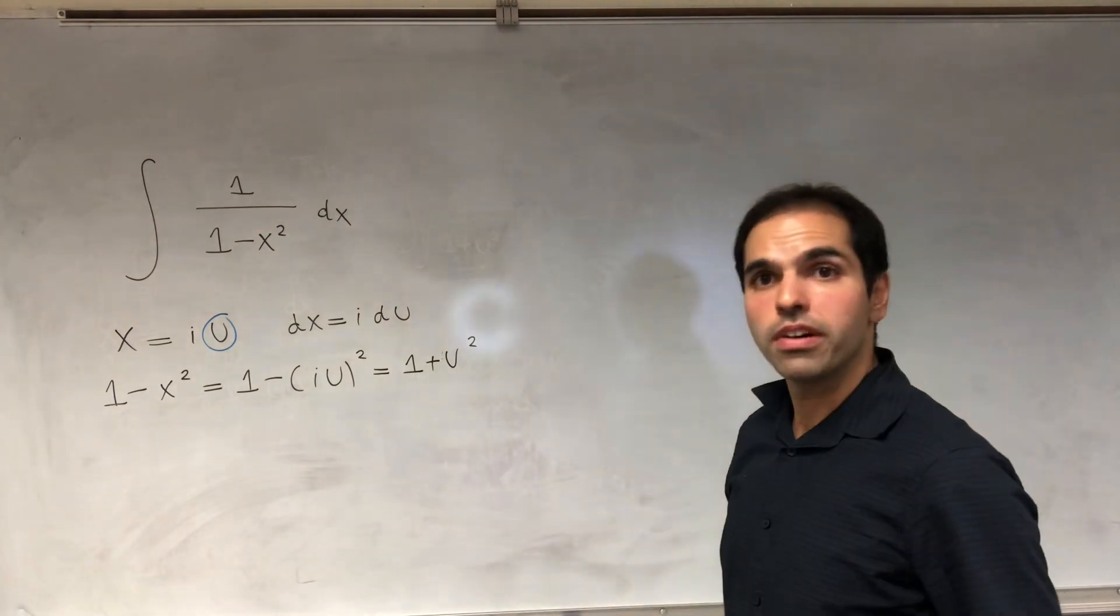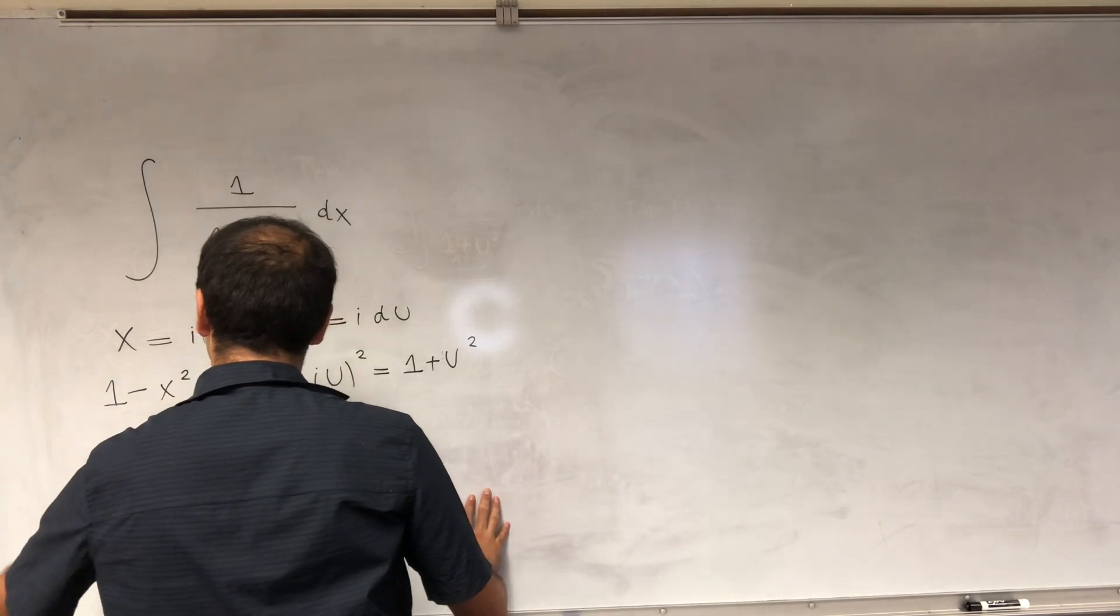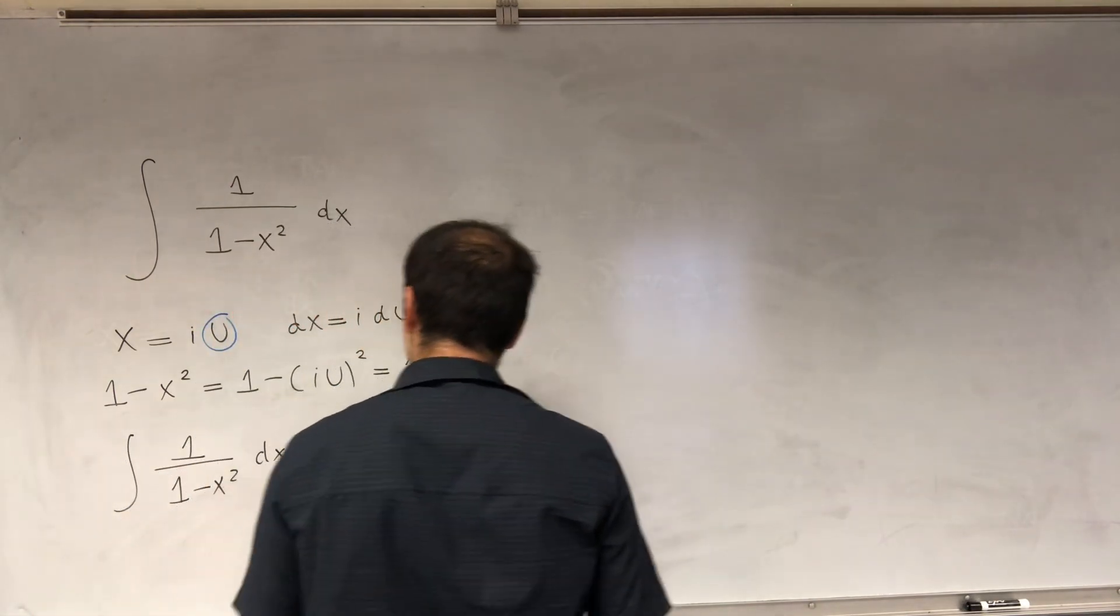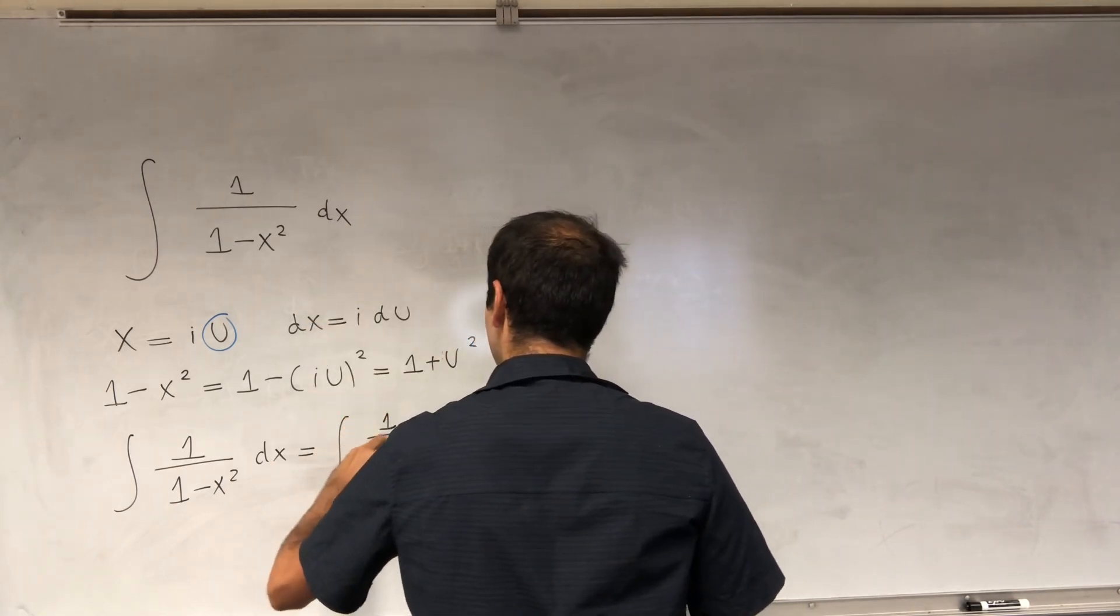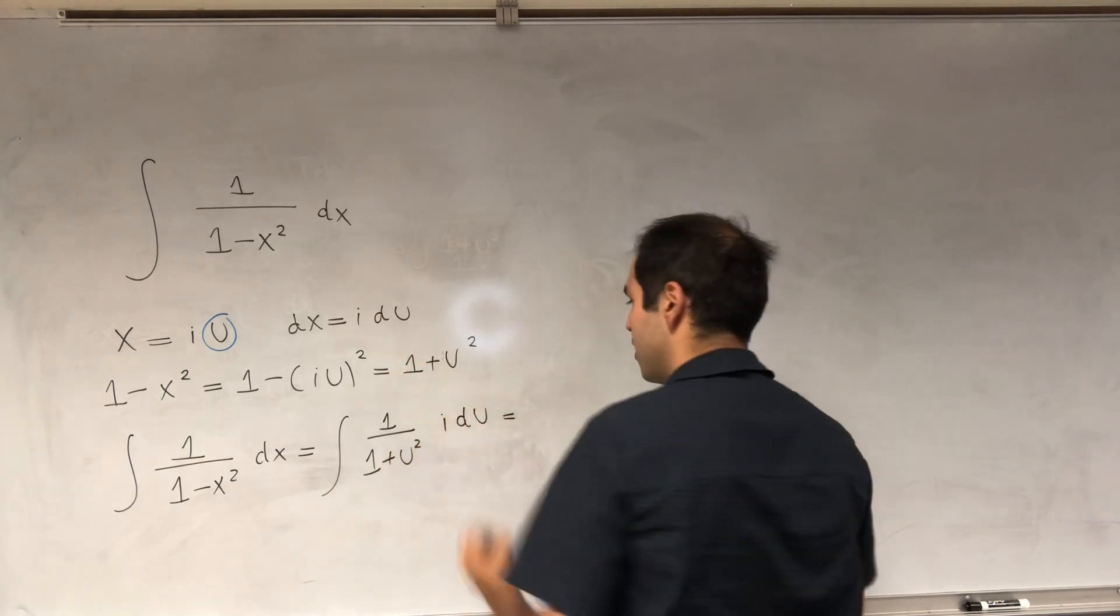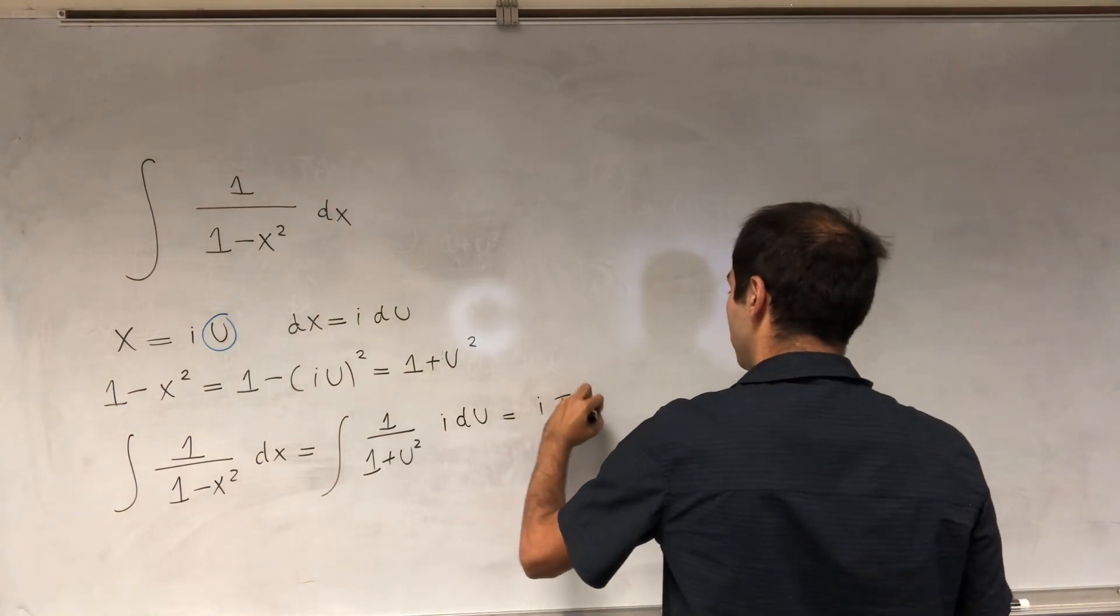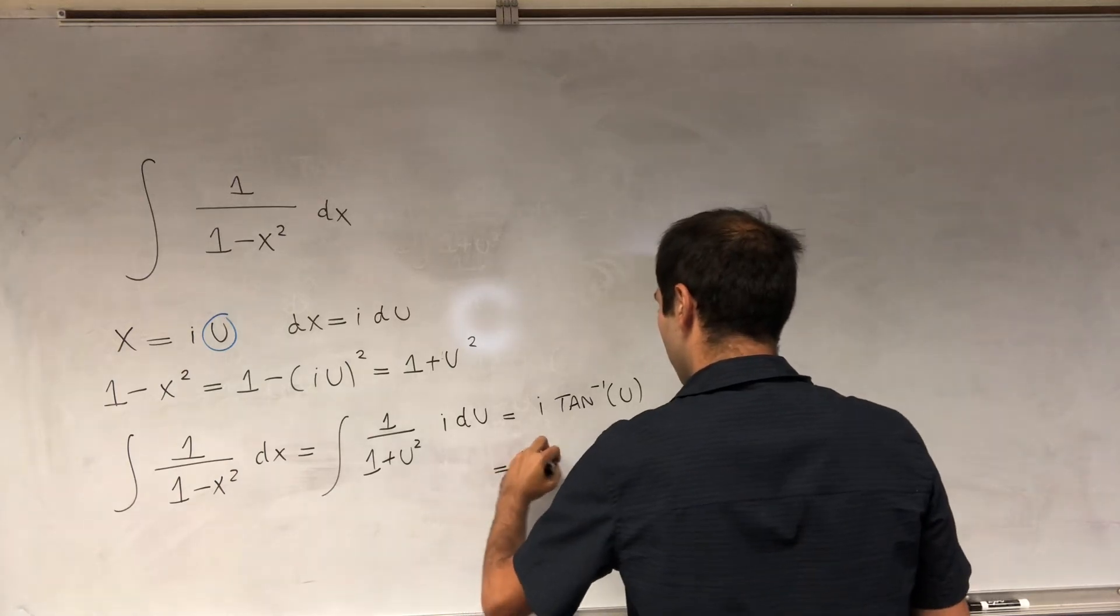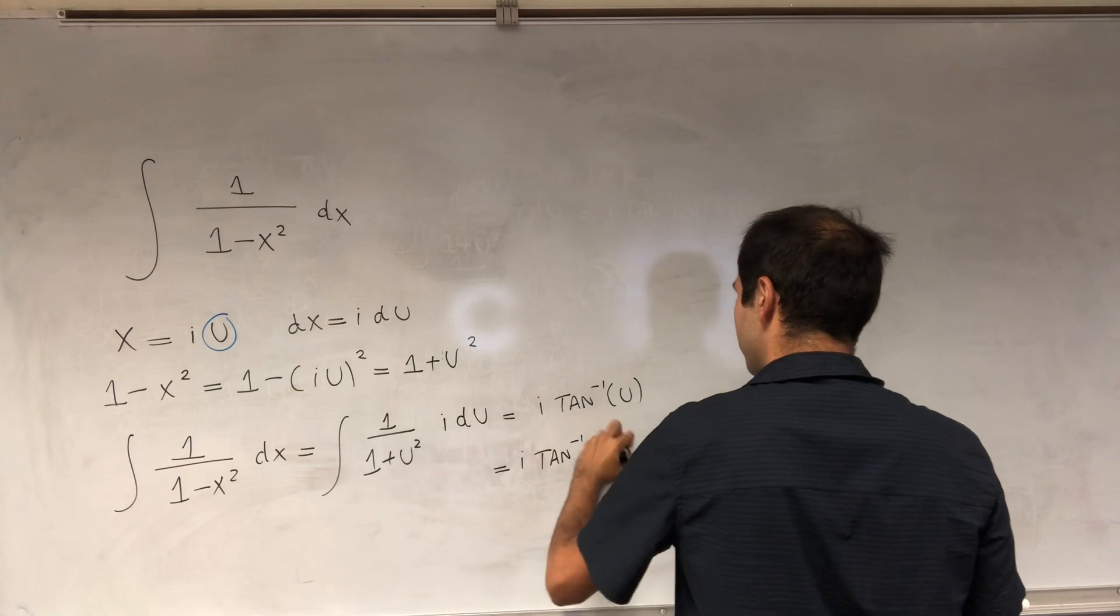So in particular, this integral becomes integral of 1 over 1 minus x squared dx, then becomes integral of 1 over 1 plus u squared. And remember it is i du, but then that's just i times arctangent of u. And then u is just x over i. So i arctangent of x over i plus a constant.